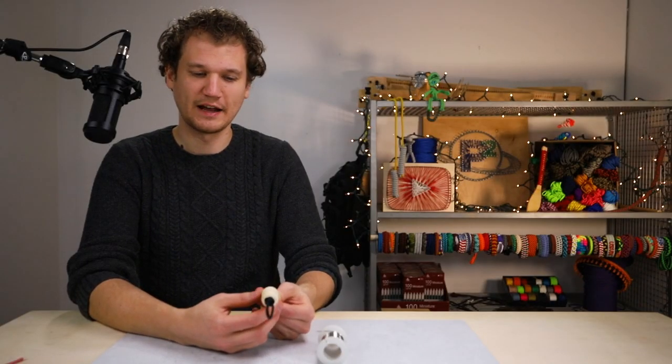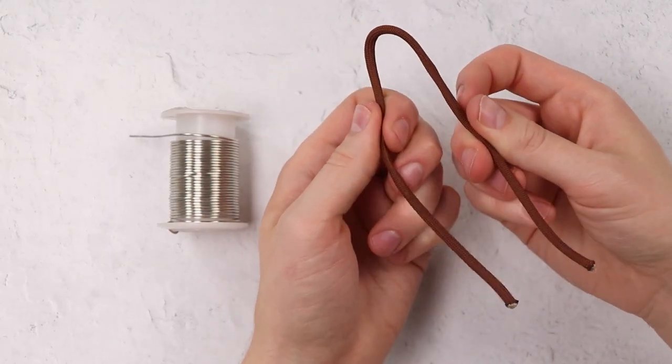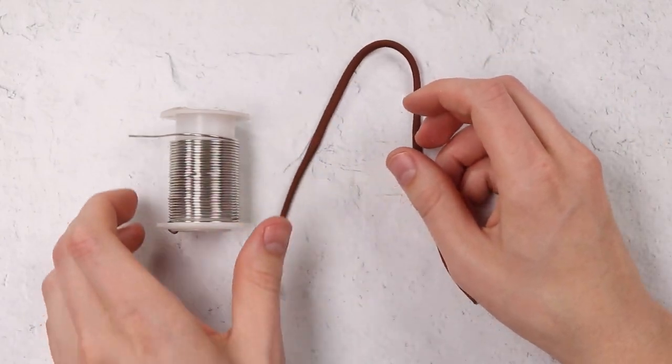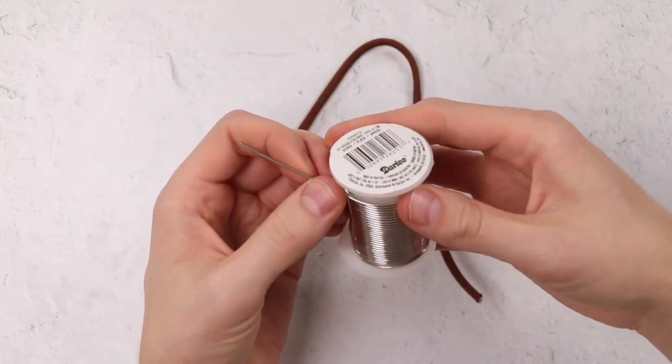And then we'll set our snowman aside while we build the arms. For those arms, you want to get your brown cord, or you can use black again if you don't have brown. And then about five inches of our craft wire. A paper clip will also do nicely if you don't have that.